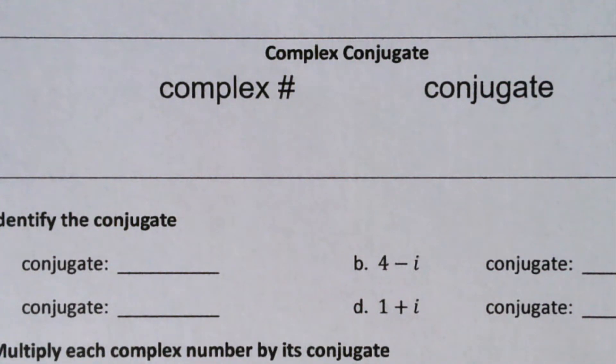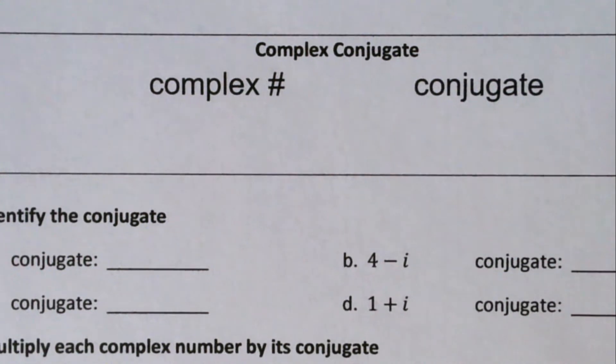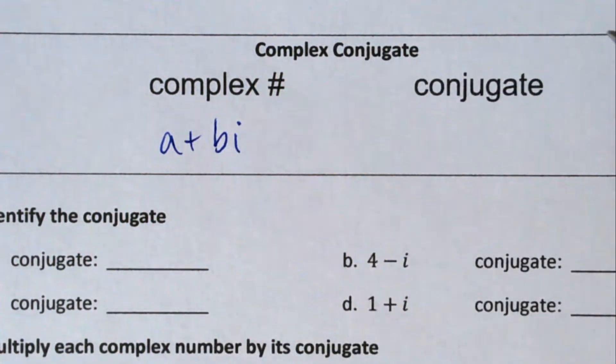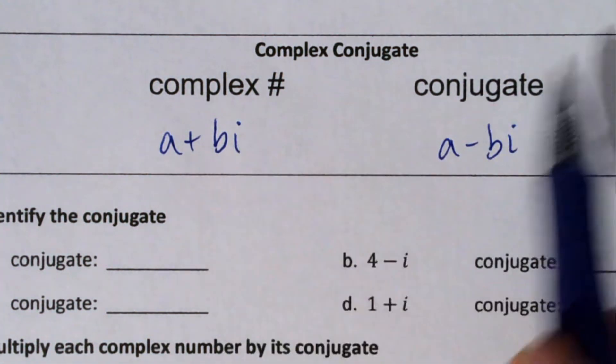So this is complex numbers and its conjugate. A complex number is a + bi and its conjugate is a - bi. So all we're going to do whenever we have a complex conjugate, you're going to change the sign of the imaginary part.